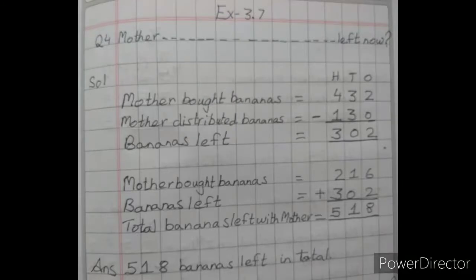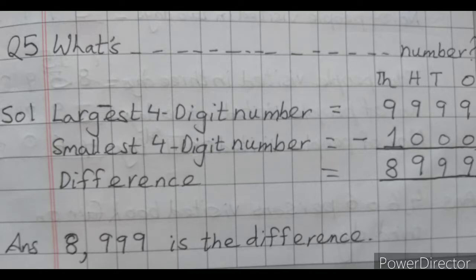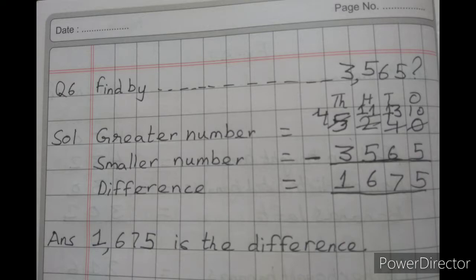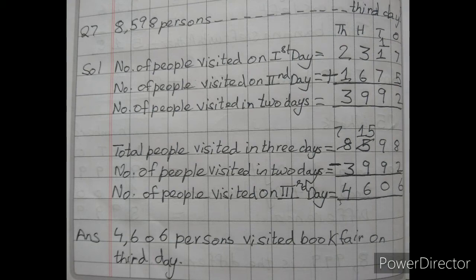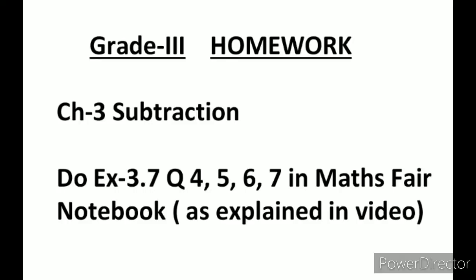Now students, all of you complete exercise 3.7 in your maths fair notebook. Do your work very neatly, and if you have any confusion you may call me or message me. The mental maths book work we are going to do later on. After this we will start with our next chapter, that is shapes. So complete your chapter subtraction in your fair notebook and book work very neatly. Till then, bye bye and take care.